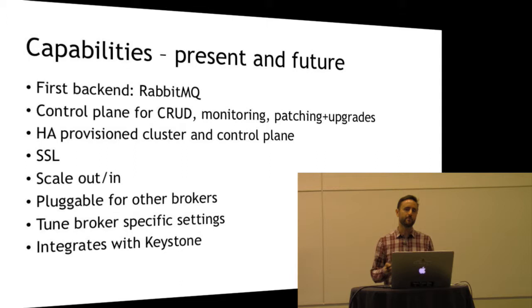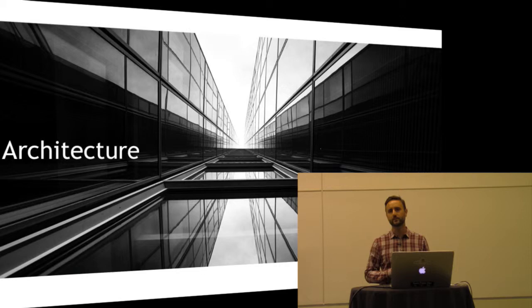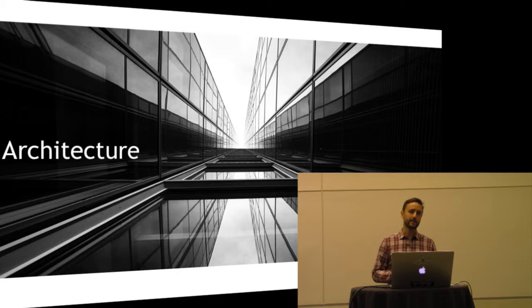Q is very much like Trove if you're trying to think of an analogous project in OpenStack. A little bit on the architecture — it looks very similar to OpenStack in some ways, and then it's got a few new components. We use Zookeeper and Taskflow, which is unique to OpenStack Q. Trove, on the other hand, uses a few other components like Apache and a Glare backend, which we also use in Q.